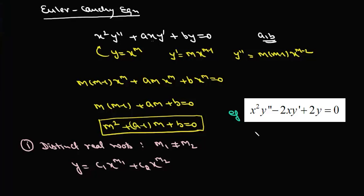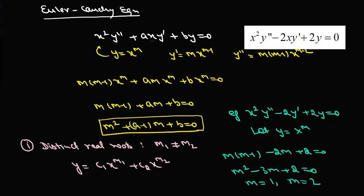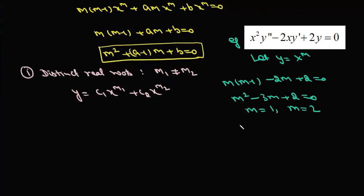Let us take up an example. We let y = x^m, so the characteristic equation becomes m(m−1) − 2m + 2 = 0. We get two real roots: m = 1 or m = 2. Since we have two distinct roots, we can write the general solution as y = c₁x + c₂x². That is our first case.